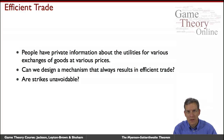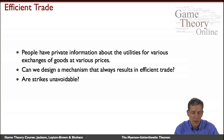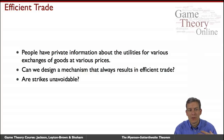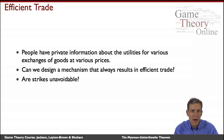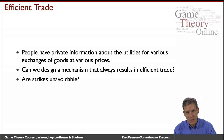When we talked about strikes at the beginning of last week, one thing important in understanding why we might have difficulties getting trade is that people can have private information about their utilities for various exchanges of goods — how much am I really willing to work, how much do I value a particular job. Can we design a mechanism that always results in efficient trade? Are strikes unavoidable? If it's not always obvious that a trade should take place, then it's going to be impossible to align incentives to get efficient trade, even in a Bayesian incentive compatible way.